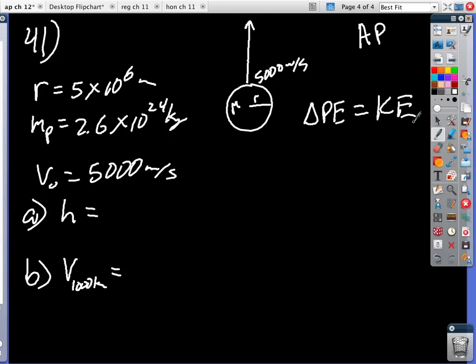I guess you could say the delta PE is going to equal the KE, right? So that's going to be the difference between the two. The PE big G ME M1 over R, and then minus big G ME M1 over R plus H, and that's going to equal one-half M1 V0 squared. That allows me to cancel out all the M1s.